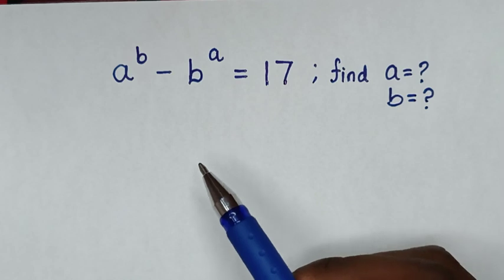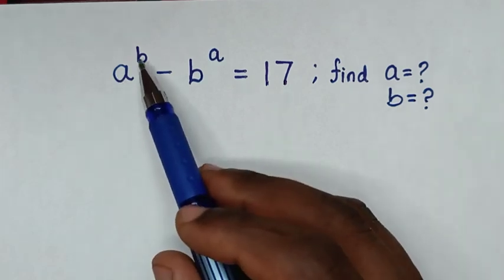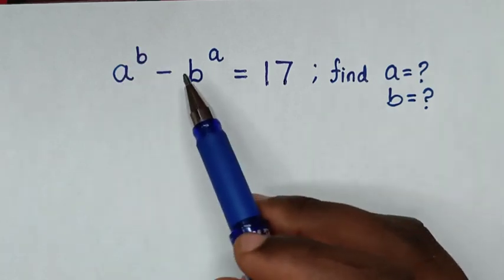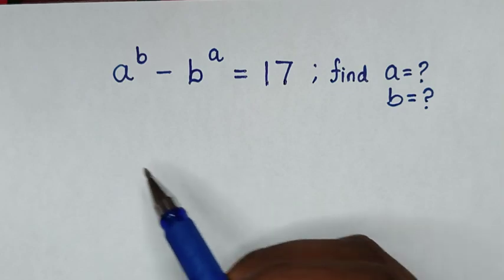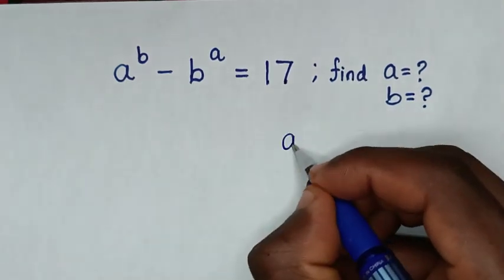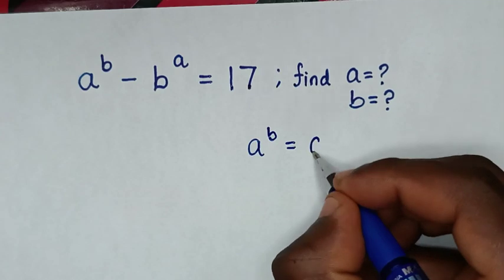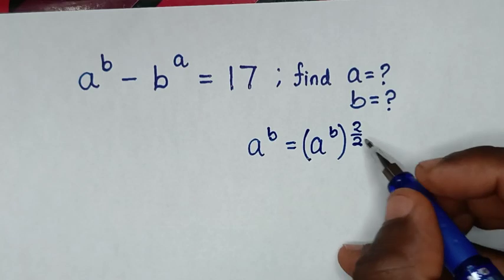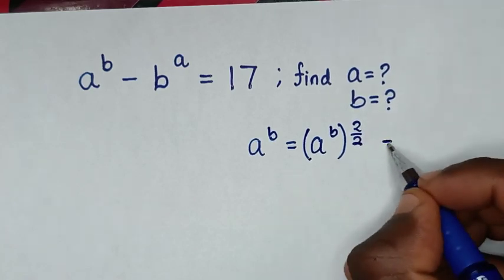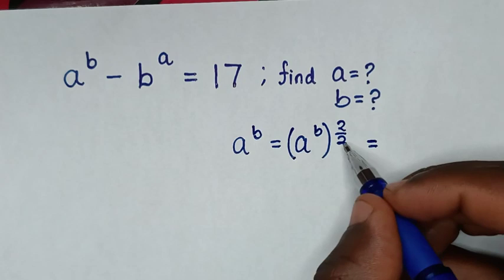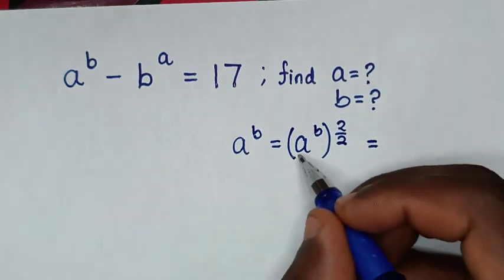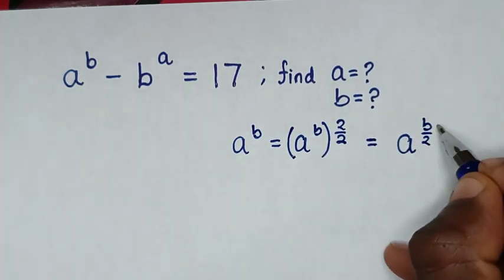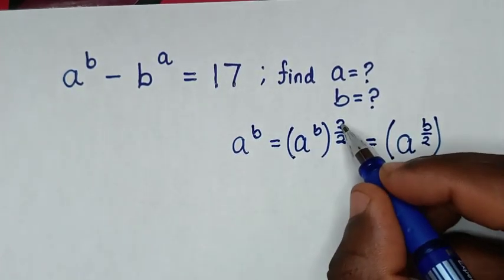In the first step, we rewrite a power of b in terms of a power of 2. So a power of b is equal to a power of b, bracket power of 2 over 2, where dividing and multiplying by 2 gives 1. We take the denominator of 2 inside the bracket, so it becomes a power of b over 2, bracket power of 2.